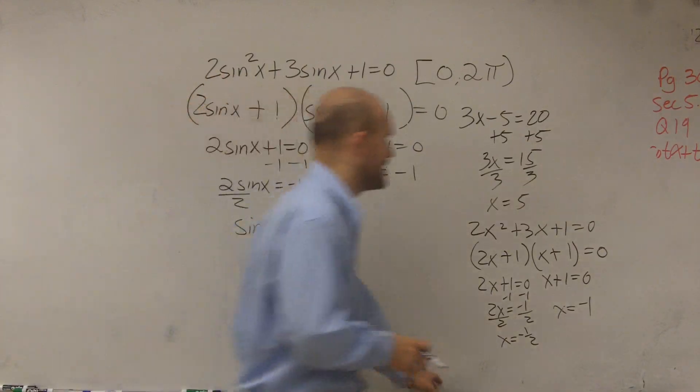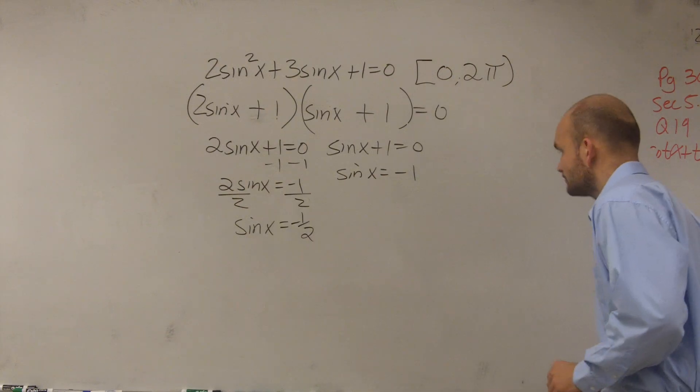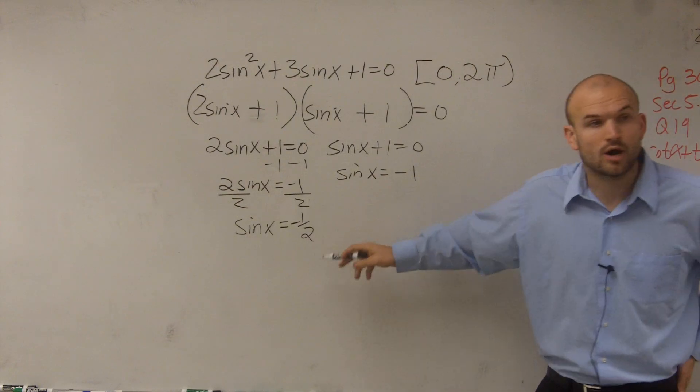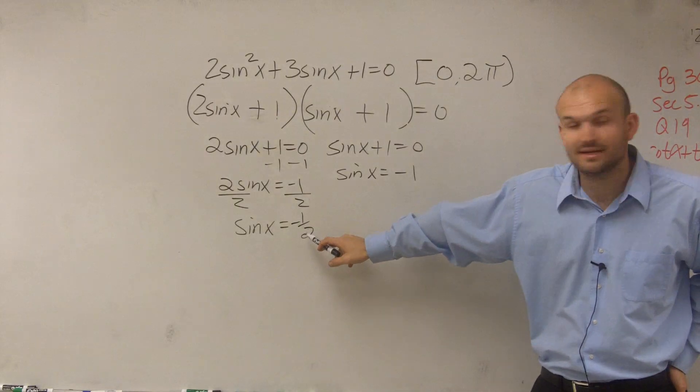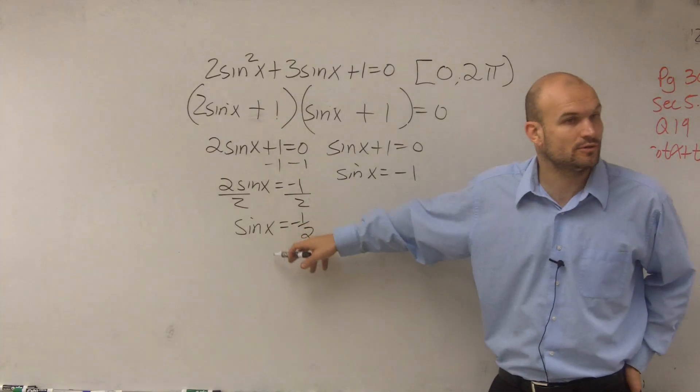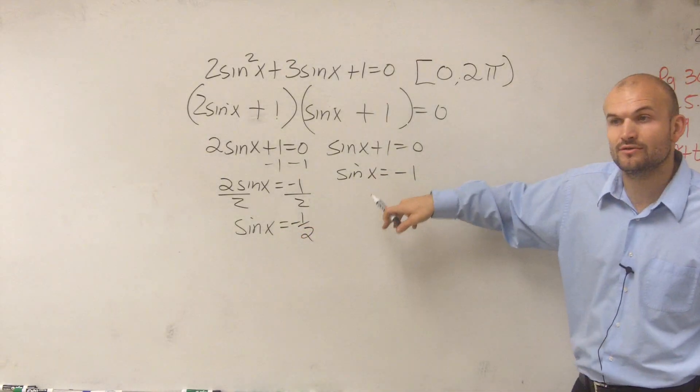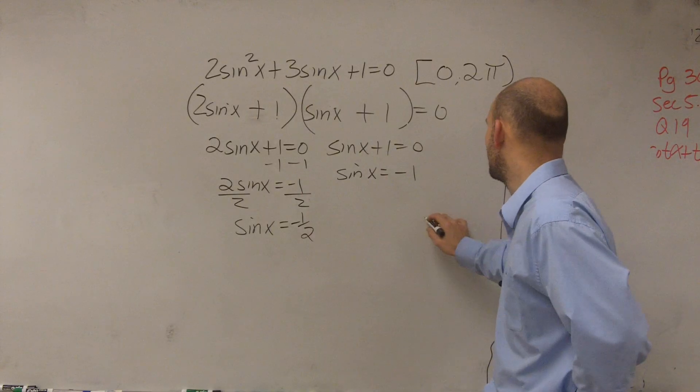So now, again, going back, knowing your unit circle, we need to determine when our equation is going to be true. We need all values when the sine of x equals negative 1 half and when we have an angle where the sine of it equals negative 1.